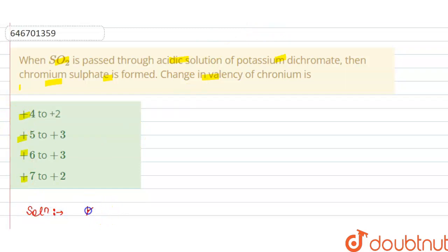So the solution of this question is we have K2Cr2O7 and SO2 is passed to it with H2SO4 for acidic solution, for the acidic medium.